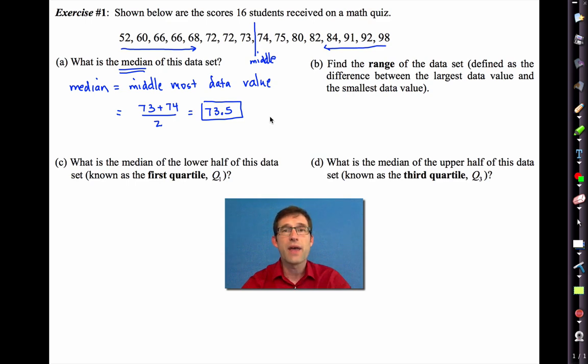Now, letter B asks us to find the range of the data set defined as the difference between the largest data value and the smallest data value. We've done that before and it's fairly simple. The range here is going to be 98 minus 52. So, the range is 46 points. That's a big range on a quiz. 46 points. Wow.